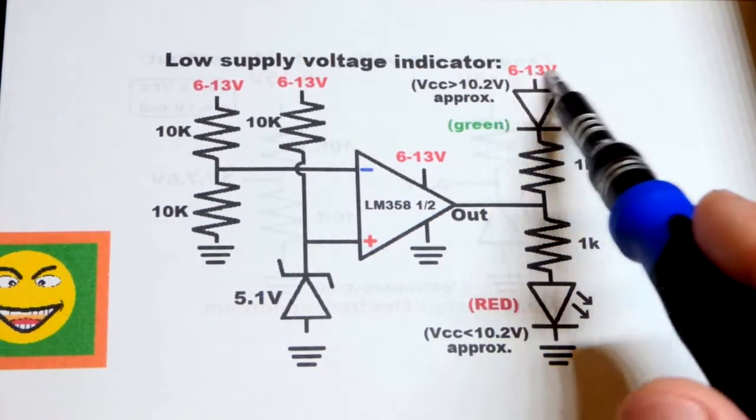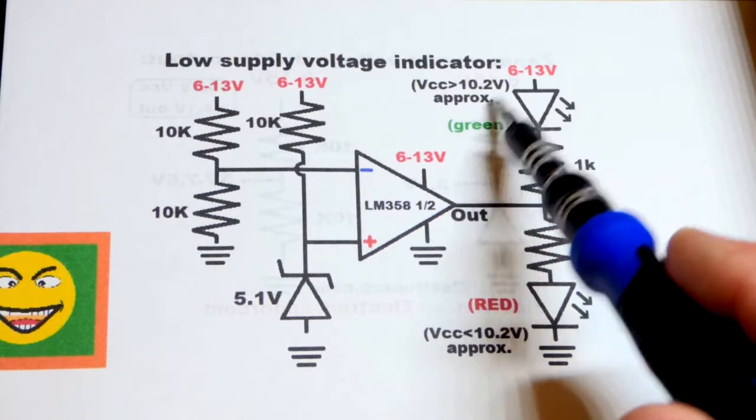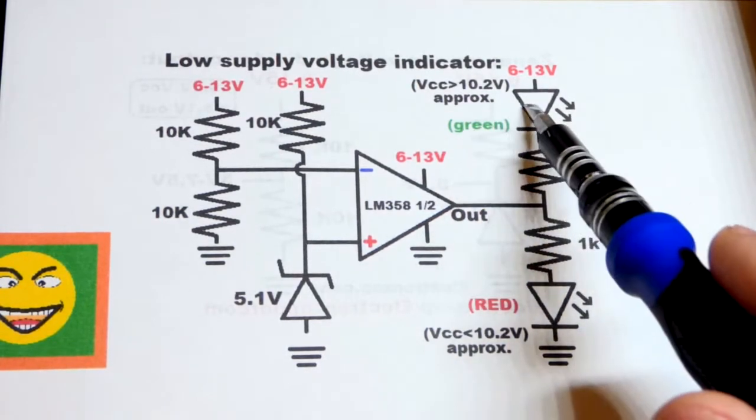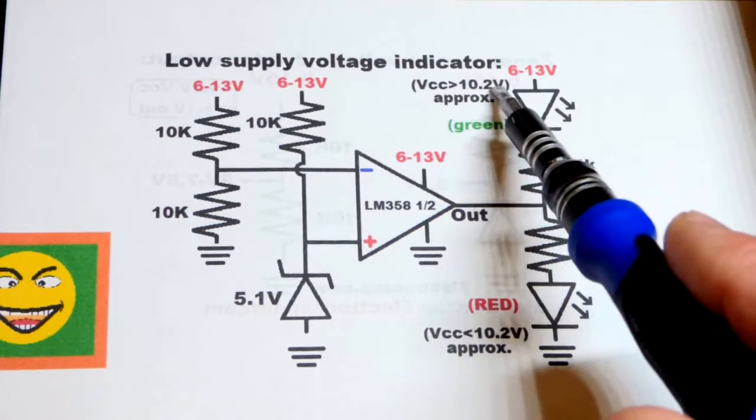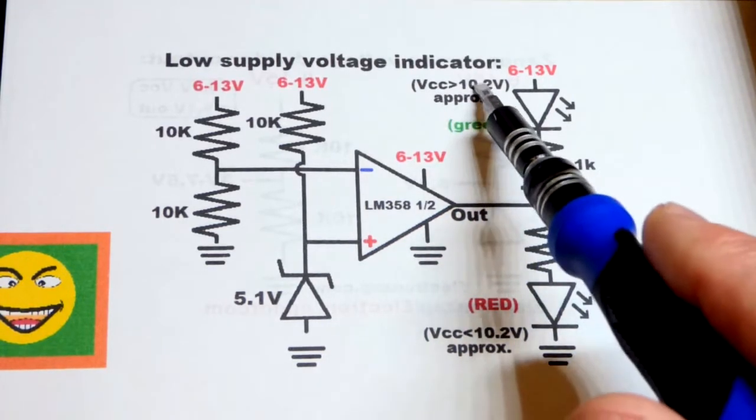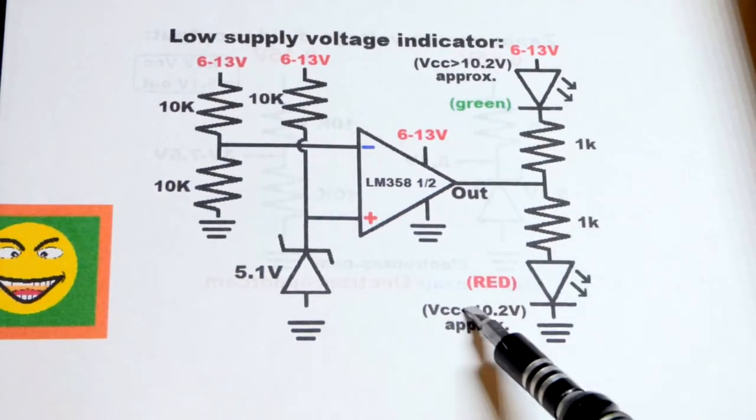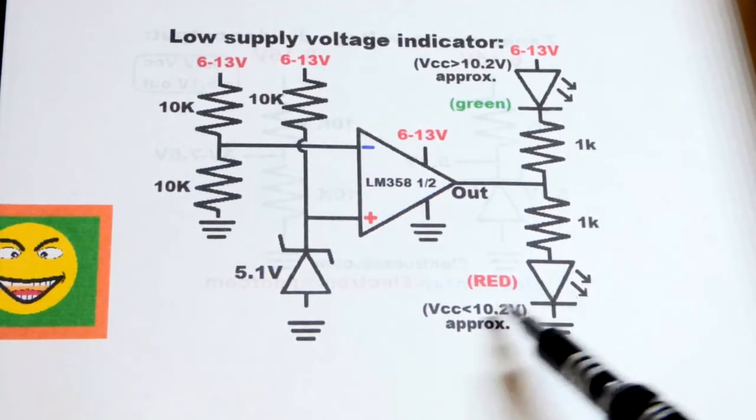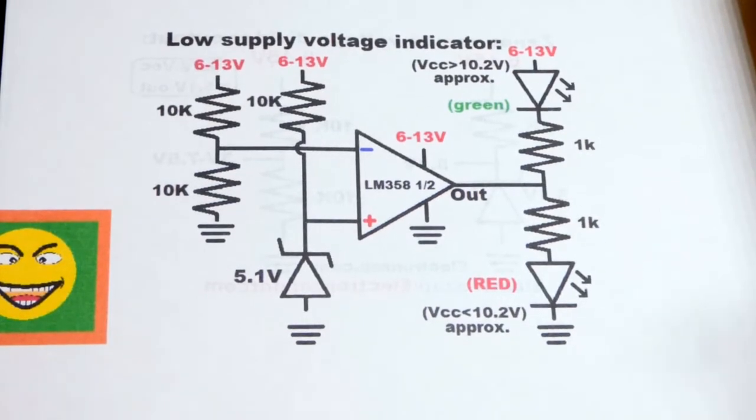I set the voltage threshold to about 10.2 volts. When the voltage is above 10.2 volts, a green LED indicates okay status. When the voltage falls short of 10.2 volts, the red LED will light up to indicate the voltage is too low.